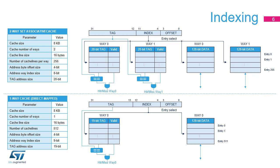The other difference is power consumption. In two-way set associative mode, both cuts of memories — way 0 tags plus data and way 1 tags plus data — are read speculatively at each cacheable memory request. In direct mapped mode, only one hardware memory cut is accessed, the one containing the 9-bit index. So direct mapped mode reduces the power consumption.